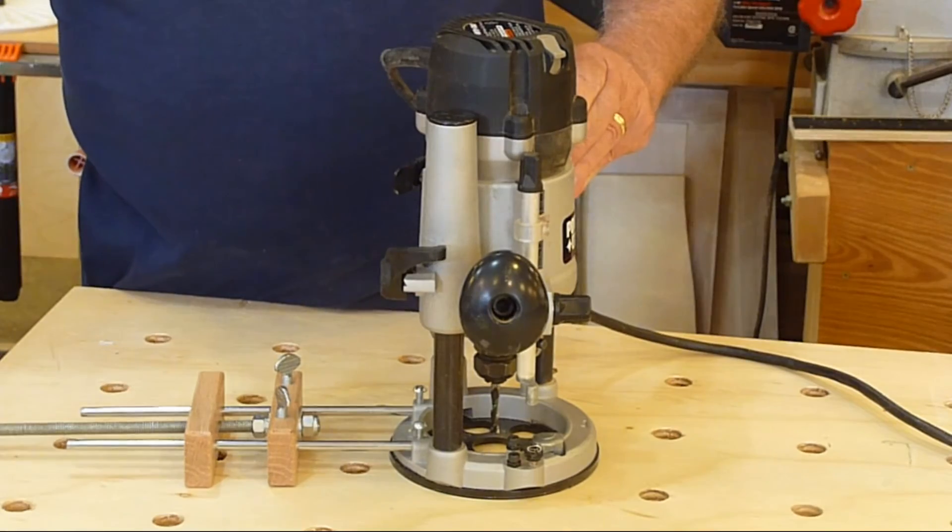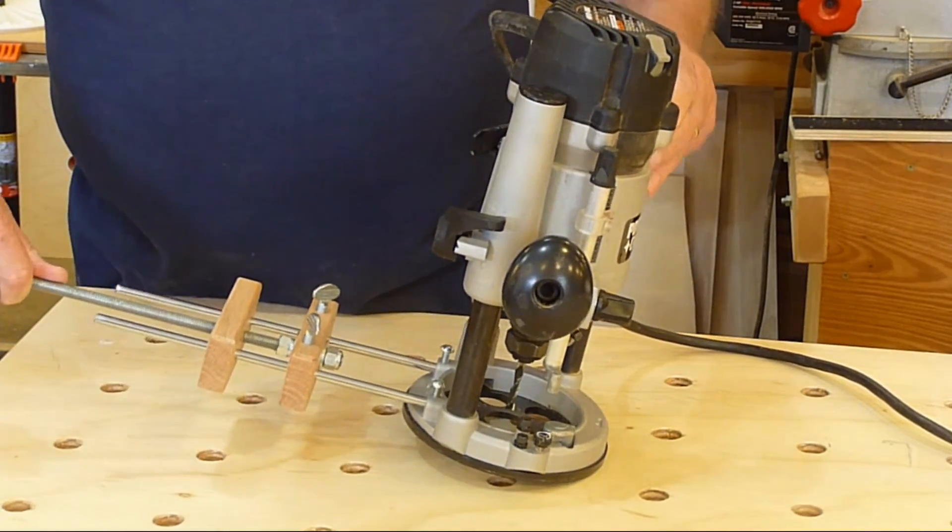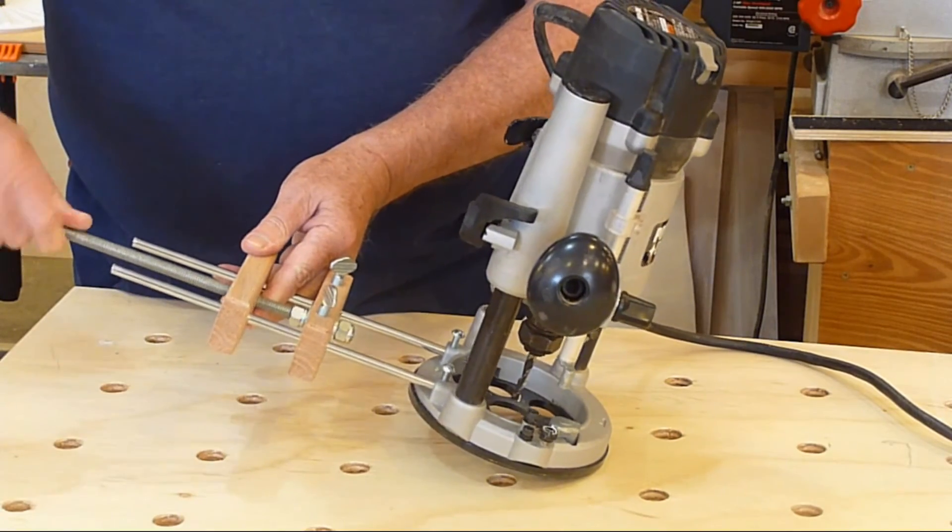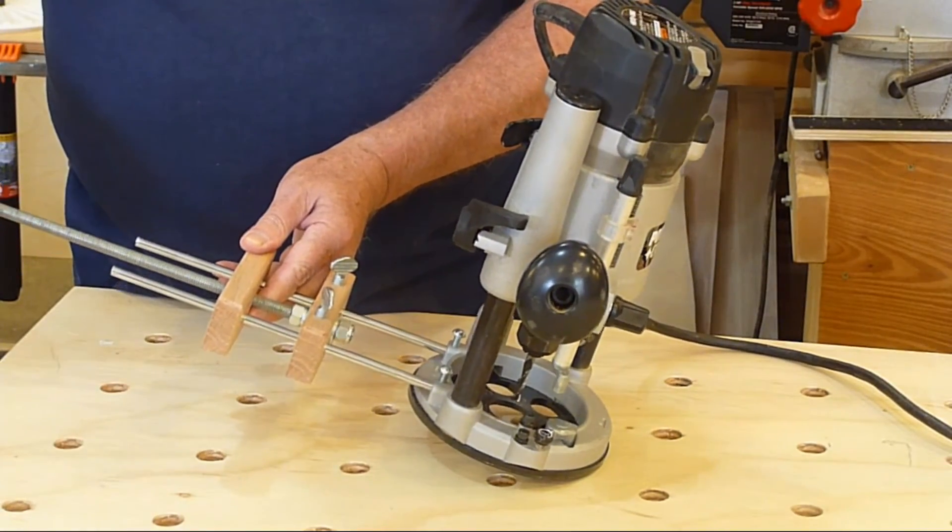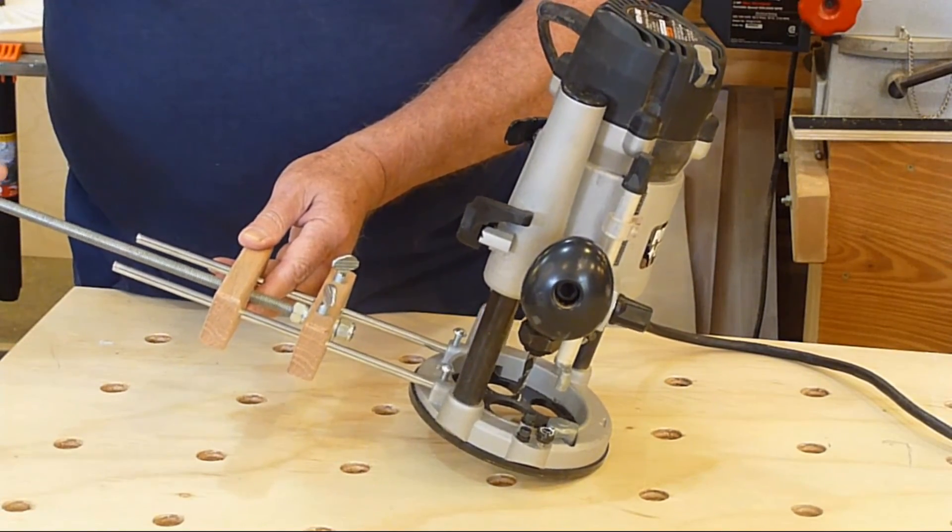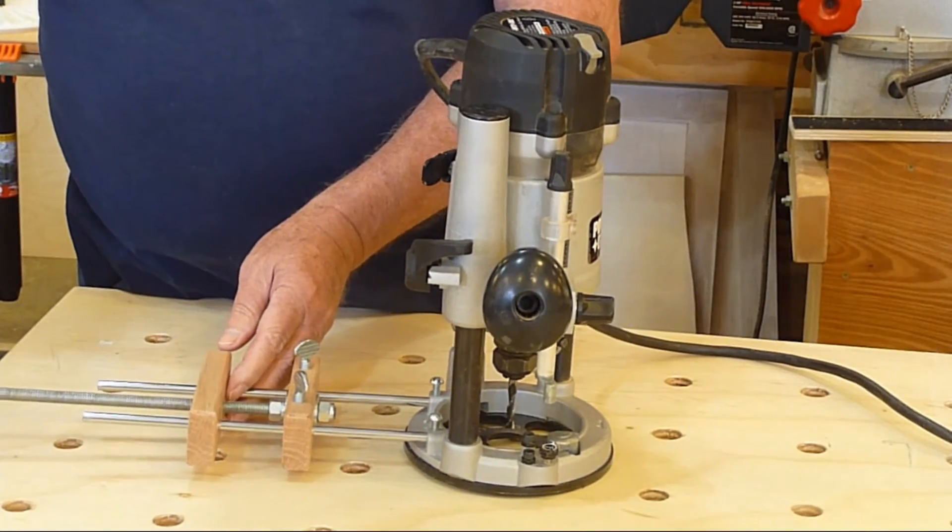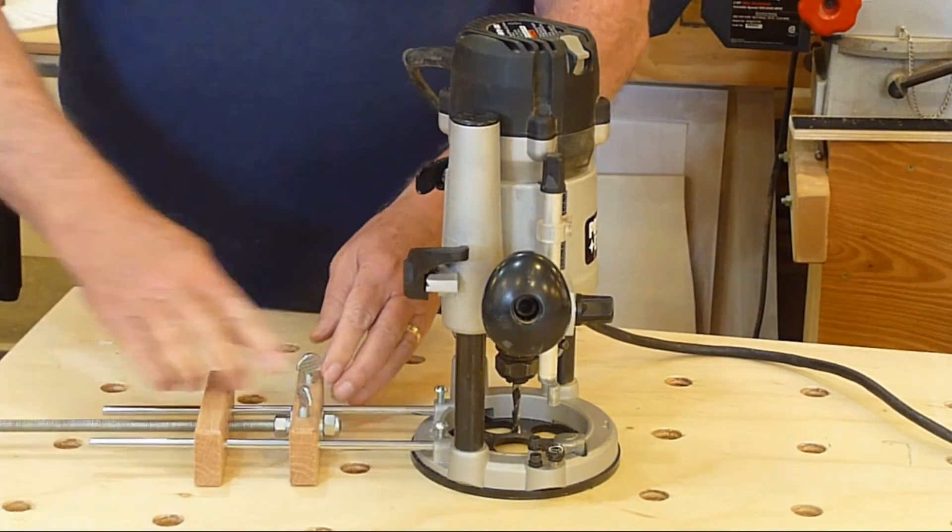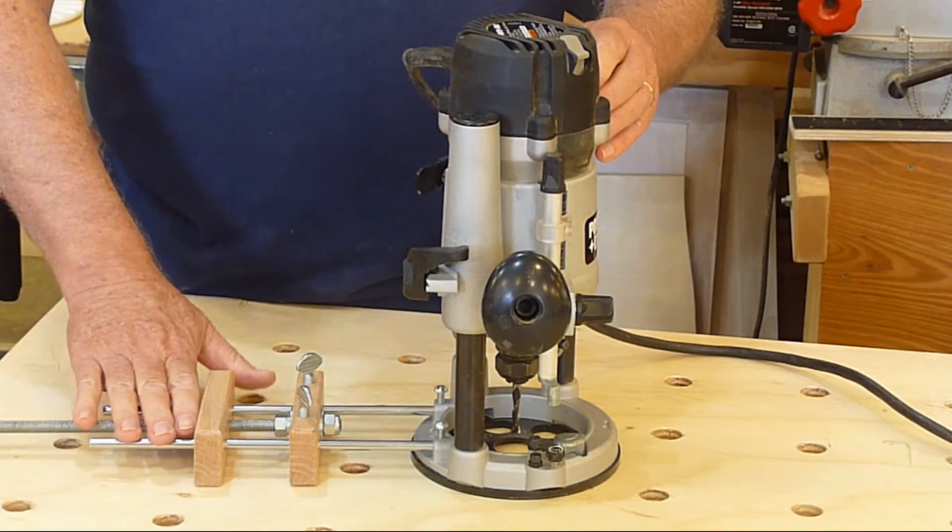Fine adjustment is done with the threaded rod, which moves this piece in or out. It might be hard to tell that it's actually moving, but it's turning out. It's moving out now, which makes the circle larger. So that's the fine adjustment. If you get close with the coarse adjustment, you can adjust it exactly to the circle you need to cut.